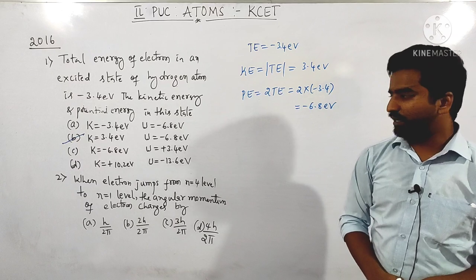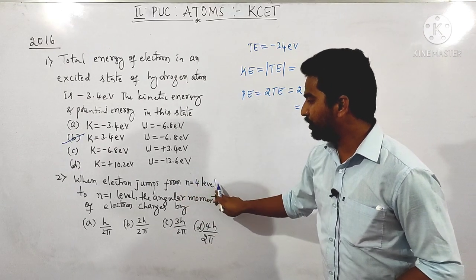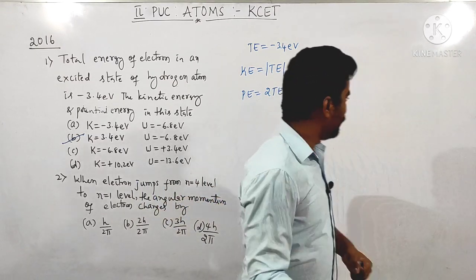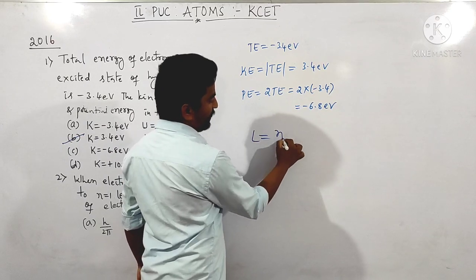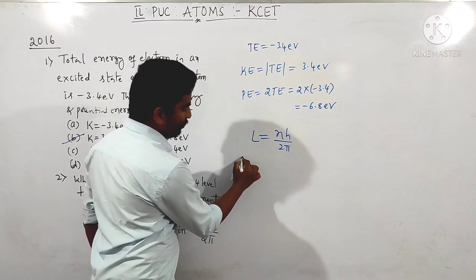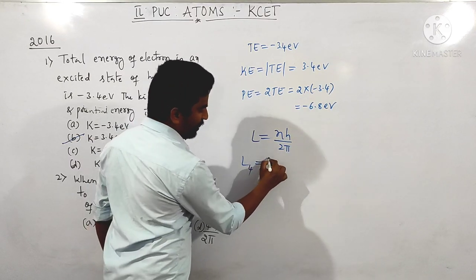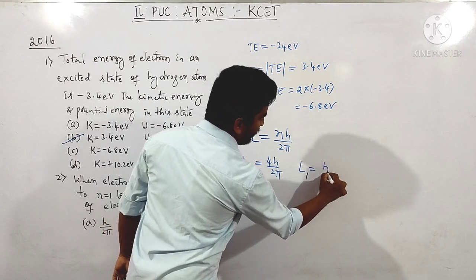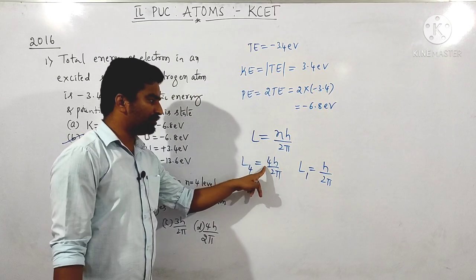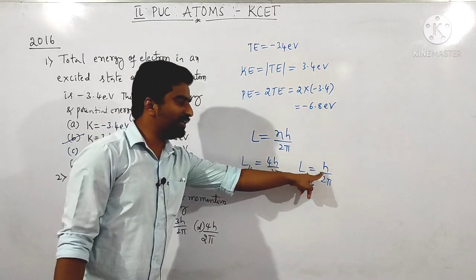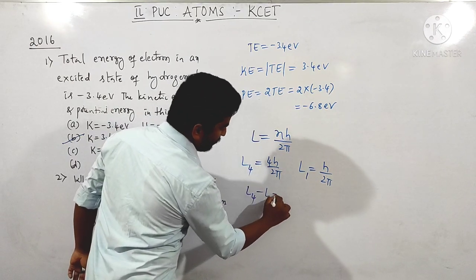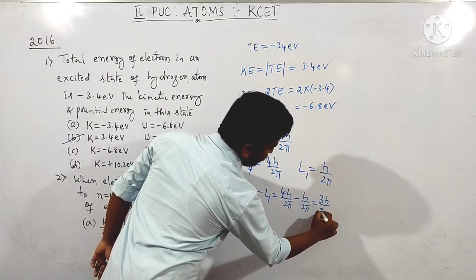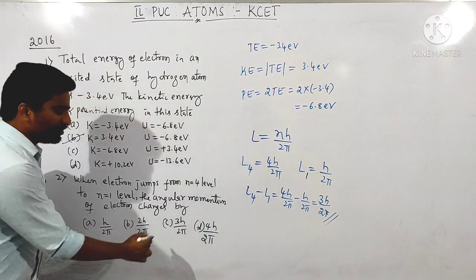Next question asked in 2016: when an electron jumps from n = 4 to n = 1, the angular momentum of the electron changes by? Angular momentum in state n = 4 is 4h/2π. Angular momentum in state n = 1 is h/2π. Change = 4h/2π − h/2π = 3h/2π. The answer is 3h/2π.